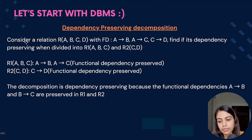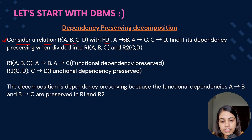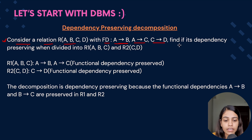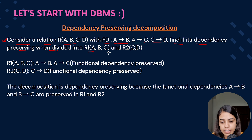Let's see one more example. Consider a relation R having attributes A, B, C, D and functional dependencies A→B, A→C, and C→D. Find if it's dependency preserving when divided into R1(A, B, C) and R2(C, D).